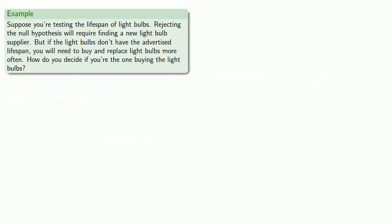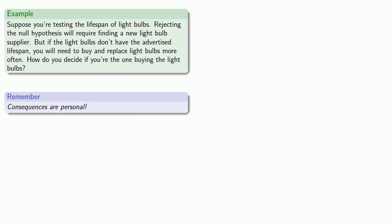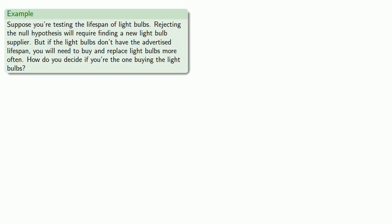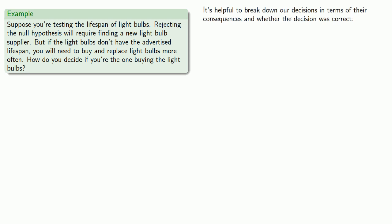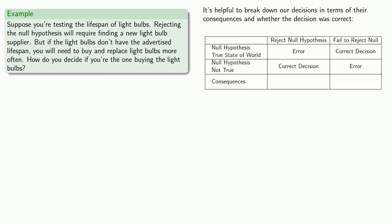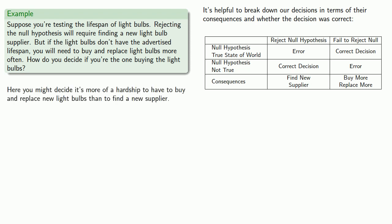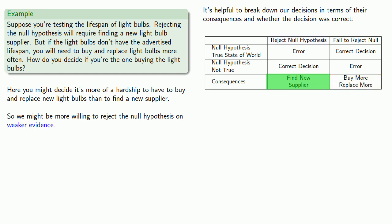Consequences are personal — the decision you make depends on who you are. So if you're a buyer of these light bulbs, rejecting the null hypothesis means you'll have to find a new supplier. But if the light bulbs don't have the advertised lifespan, you'll need to buy and replace them more often. Rejecting the null hypothesis means going to a different store or buying a different brand, whereas failing to reject means a lot of extra effort. So you might decide it's more of a hardship to buy and replace light bulbs than to find a new supplier, and be more willing to reject the null hypothesis on weaker evidence.